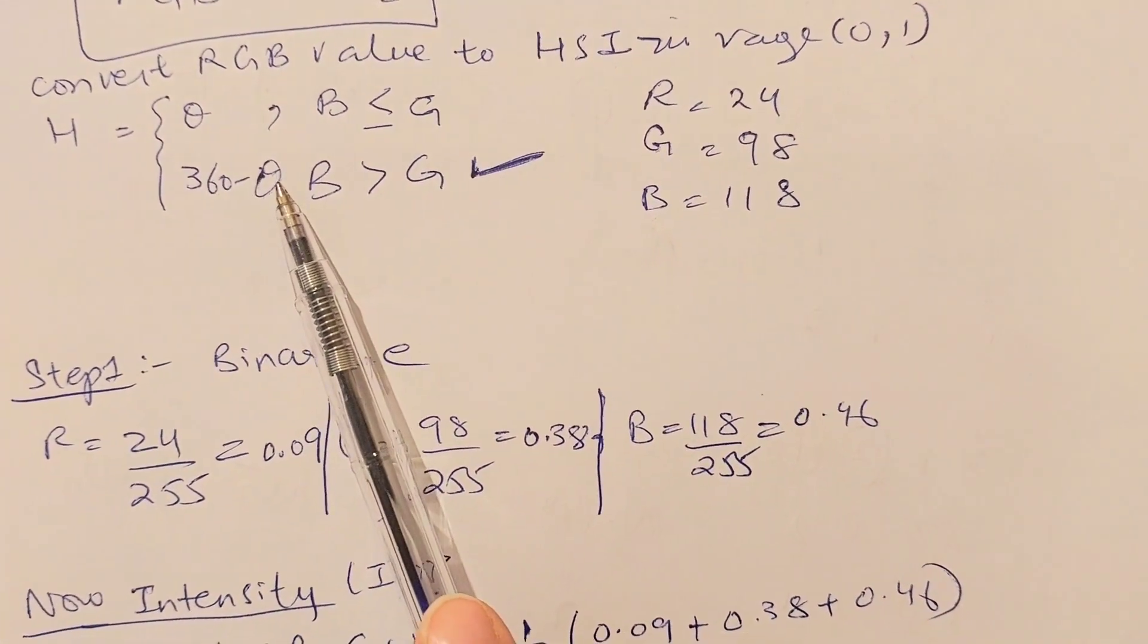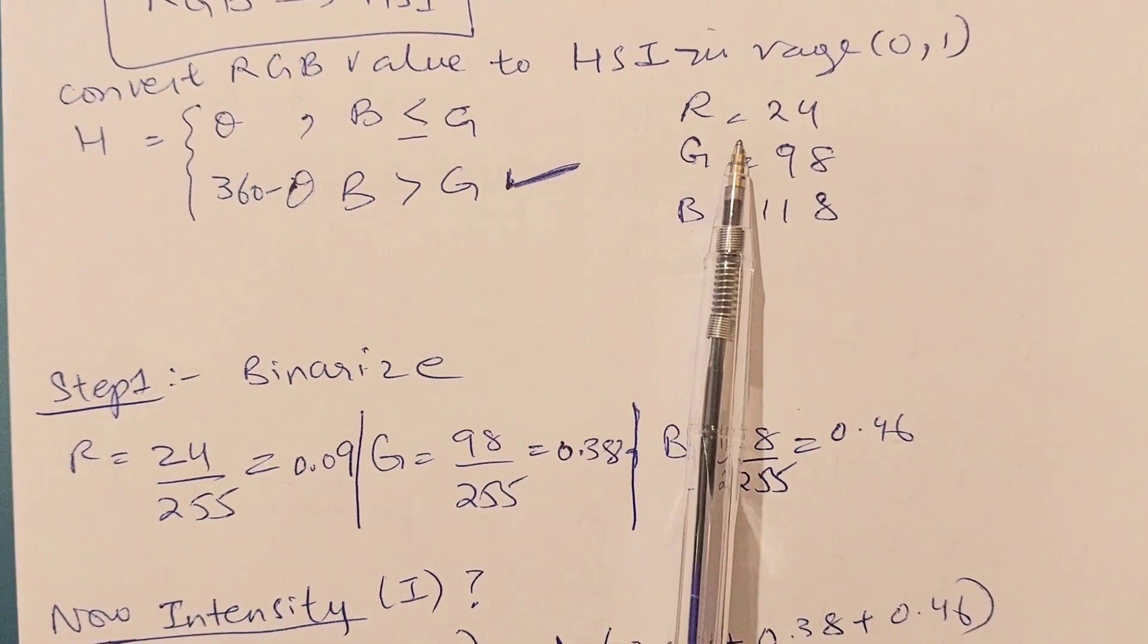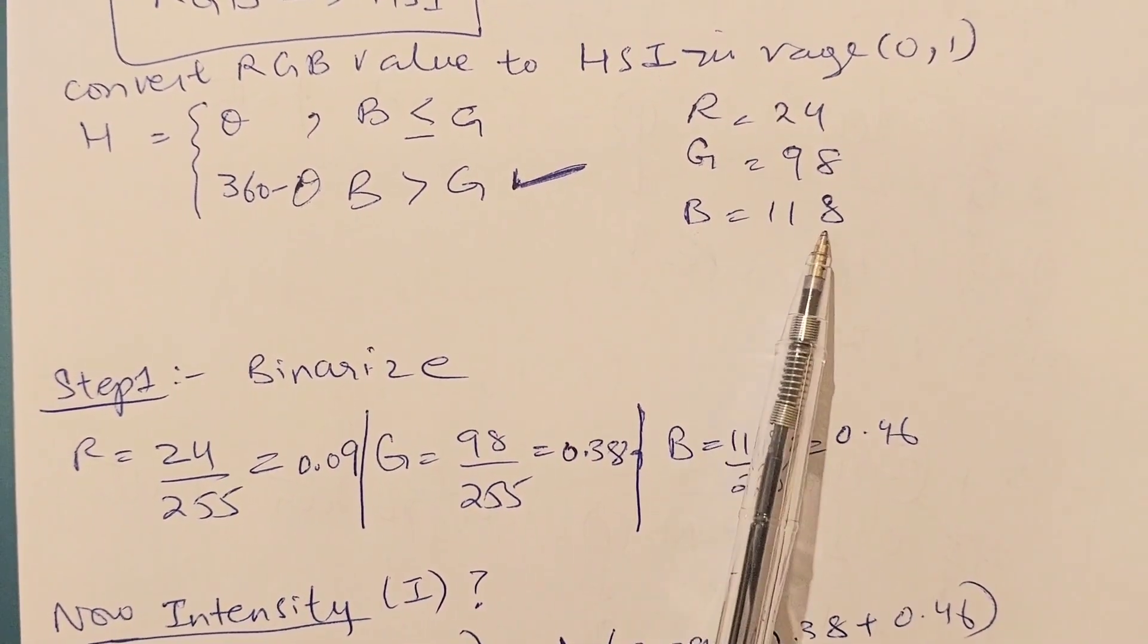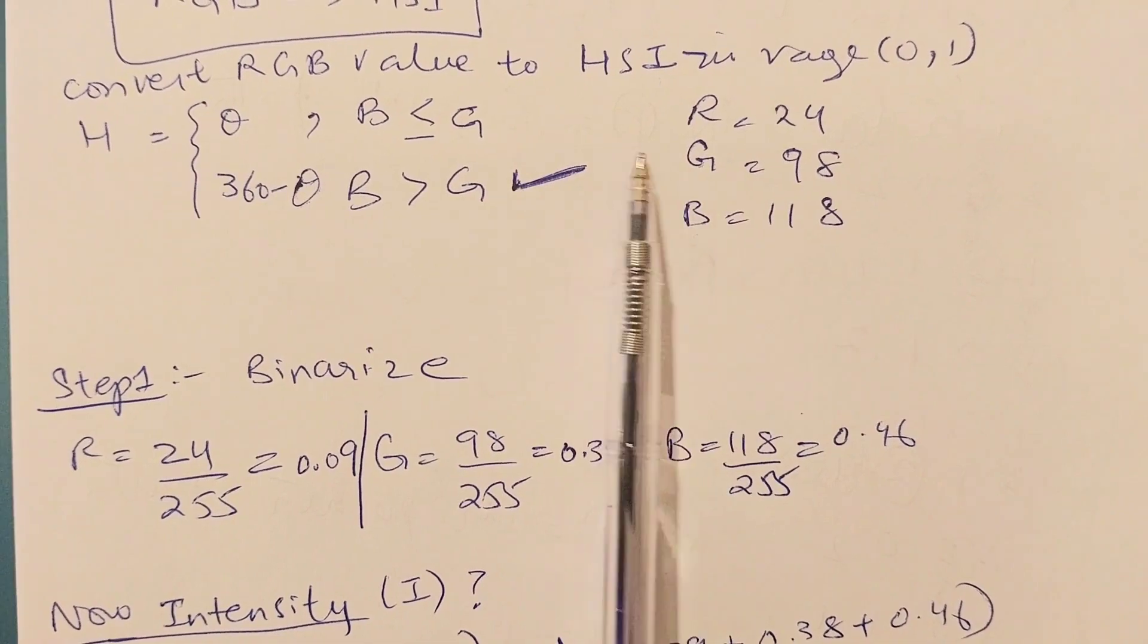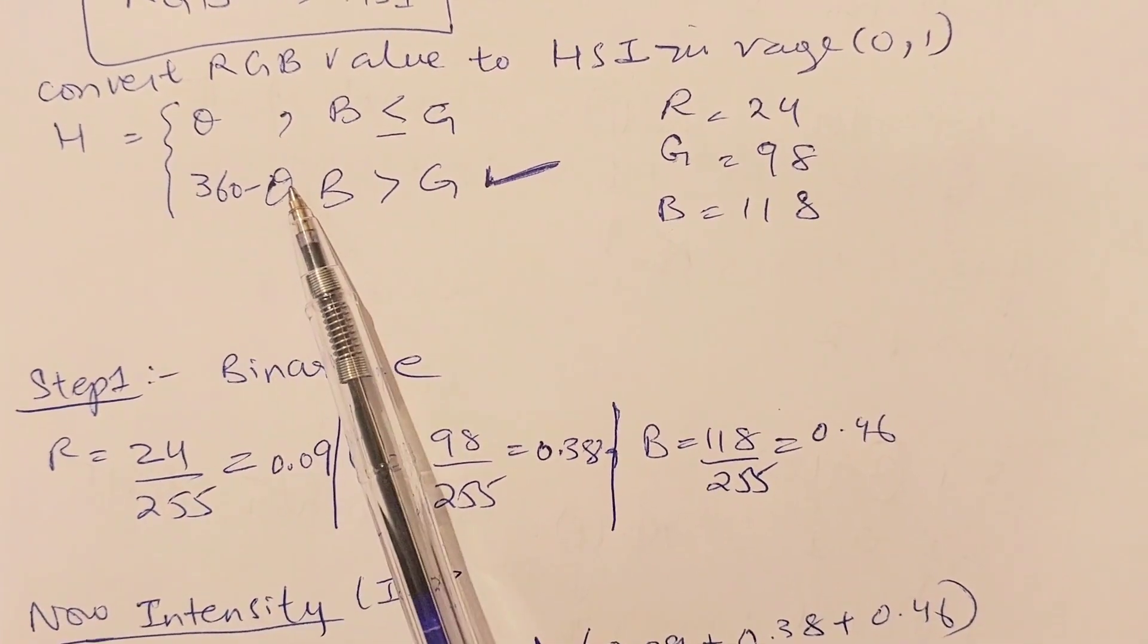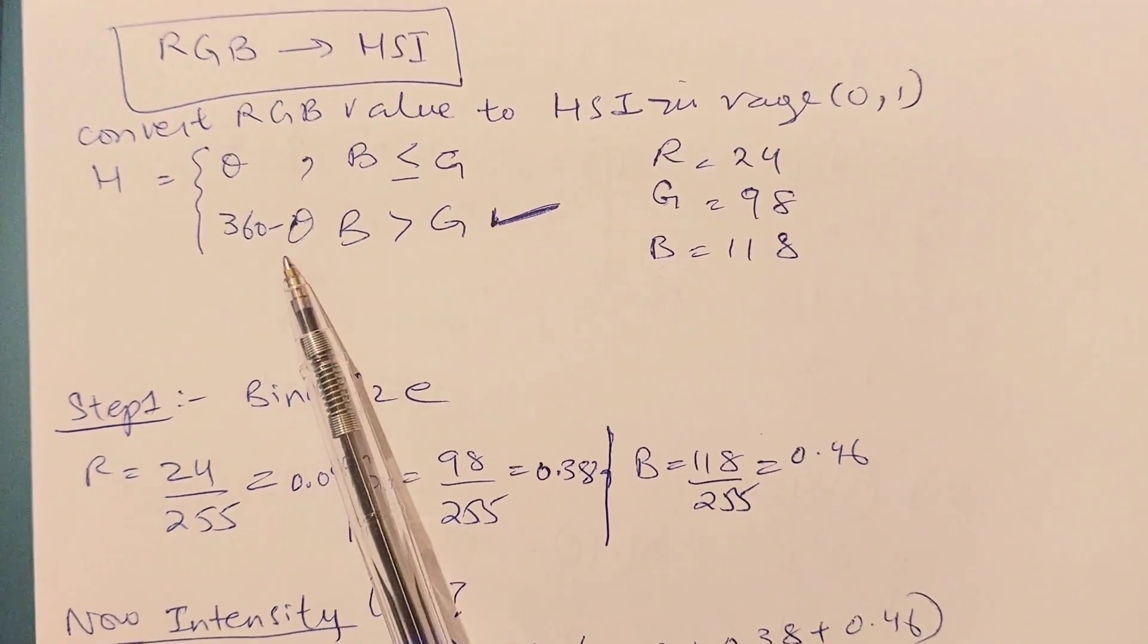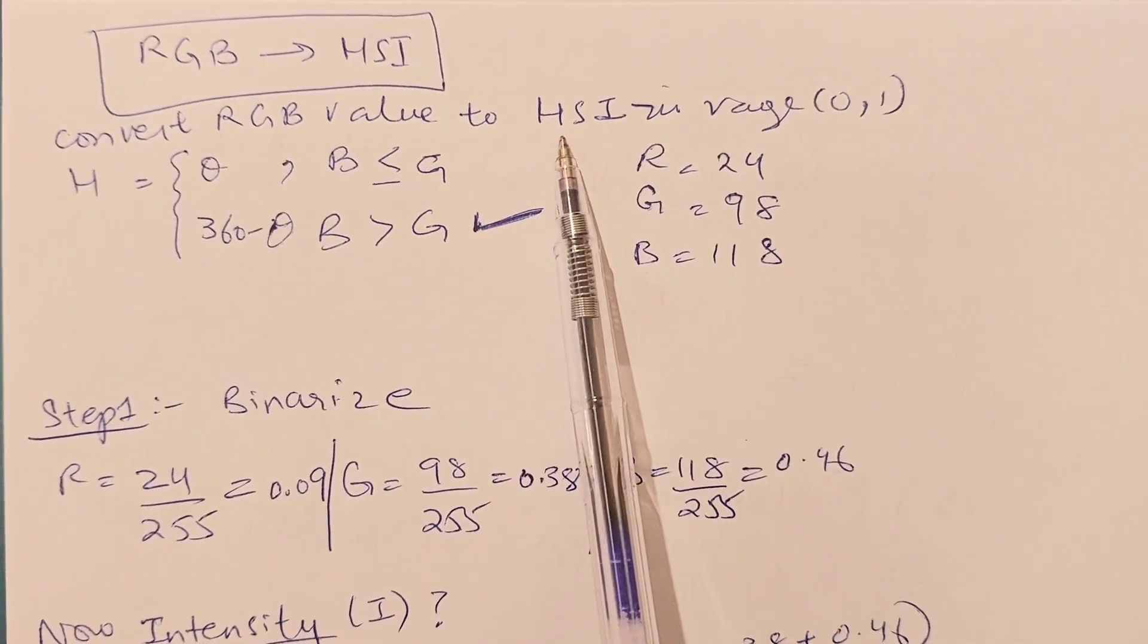In our case, you can see that this is the situation because the value of blue is higher than the value of green, right? So we are going to use this formula in the end after calculating theta.